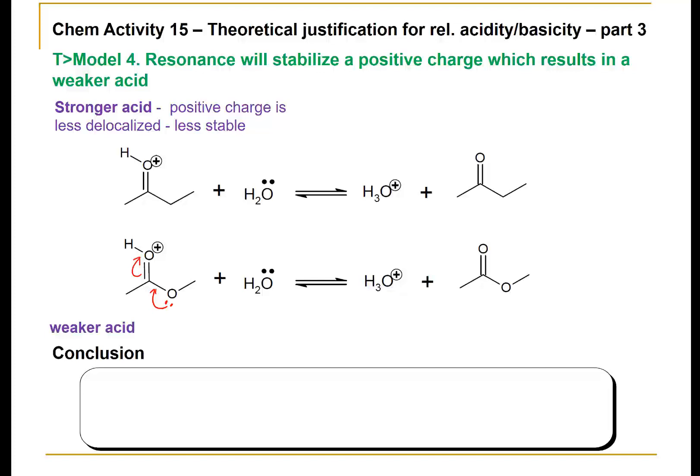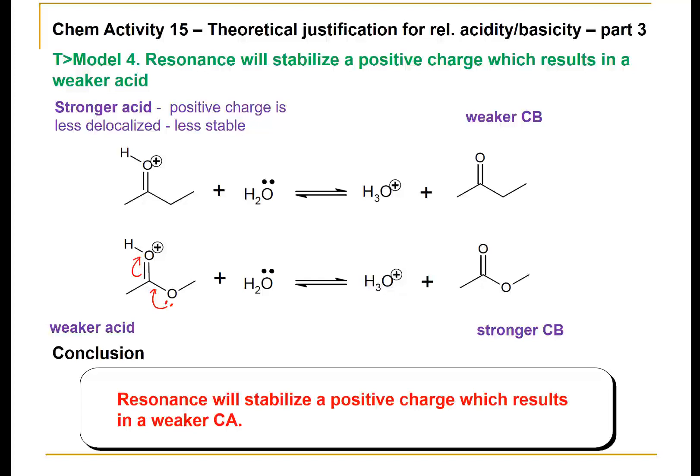The positive charge is less delocalized, it is less stable, that acid is more reactive. Correspondingly, the weaker acid has the more stabilized positive charge. Our ester is a stronger conjugate base compared to our ketone. The protonated ester at the carbonyl group is the more stabilized positive charge. So in conclusion, resonance will stabilize the positive charge, which results in a weaker conjugate acid.